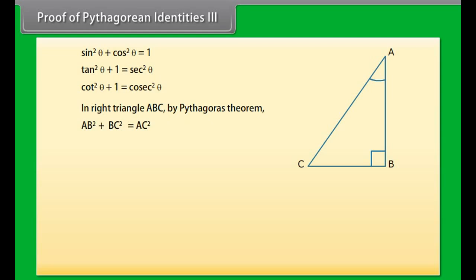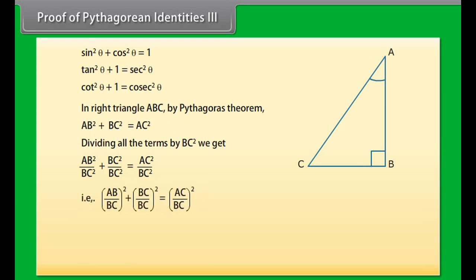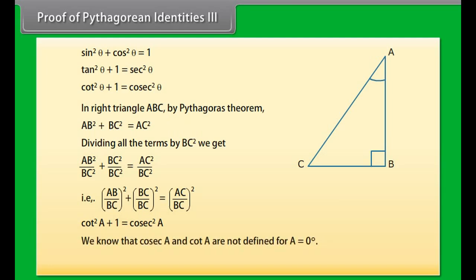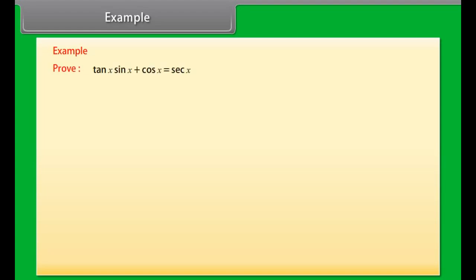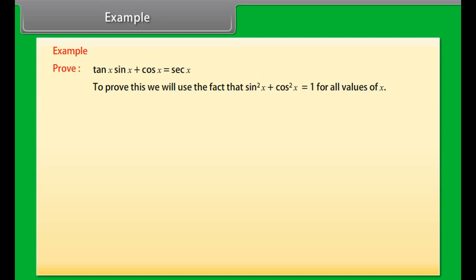Proof of Pythagorean identity 3. The last identity is cot square theta plus 1 is equal to cosecant square theta. To prove this we again take a right triangle ABC. By Pythagoras theorem, AB square plus BC square is equal to AC square. Dividing all the terms by BC square we get: AB upon BC whole square plus BC upon BC whole square is equal to AC upon BC whole square. That is, cot square A plus 1 is equal to cosecant square A. We know that cosecant A and cot A are not defined for A equal to 0 degree. Therefore it is true for all A such that 0 degree is less than A, which is less than or equal to 90 degree.